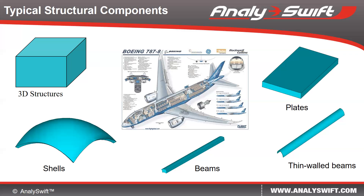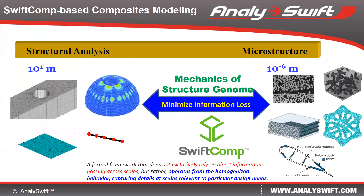Those idealized structure components are modeled using 3D solid elements, plate and shell elements, and beam elements. Therefore, the focus of composite modeling is to make sure those structure elements can accurately represent the real structure, given the material microstructure as input, then decide which model and elements to use in the global structure analysis. We need to model the information loss between these two model representations.